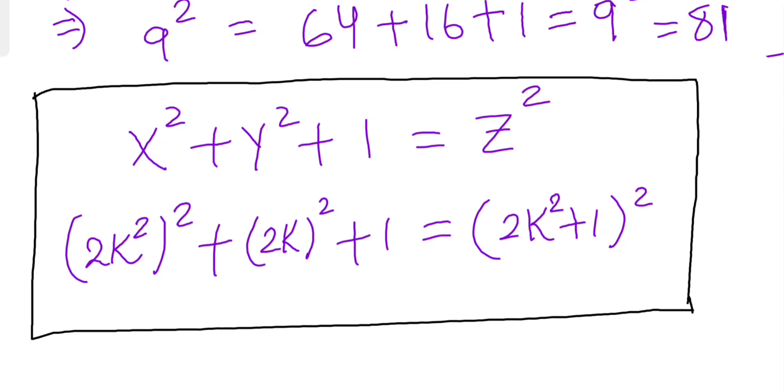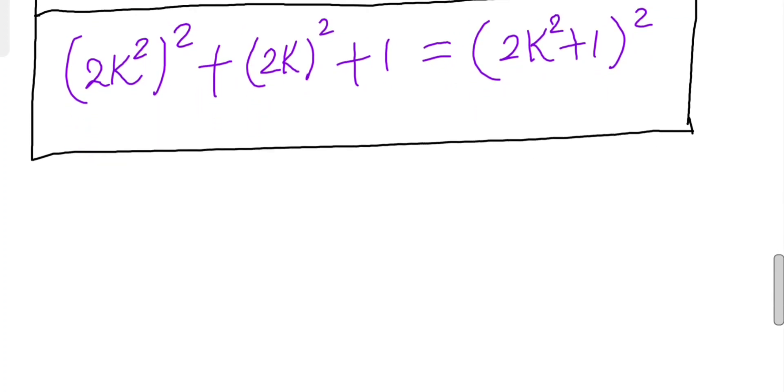For any integer k, you can plug in positive or negative integers, and you will get a solution every single time. So actually we have infinitely many solutions. This is a parametric formula for this problem.